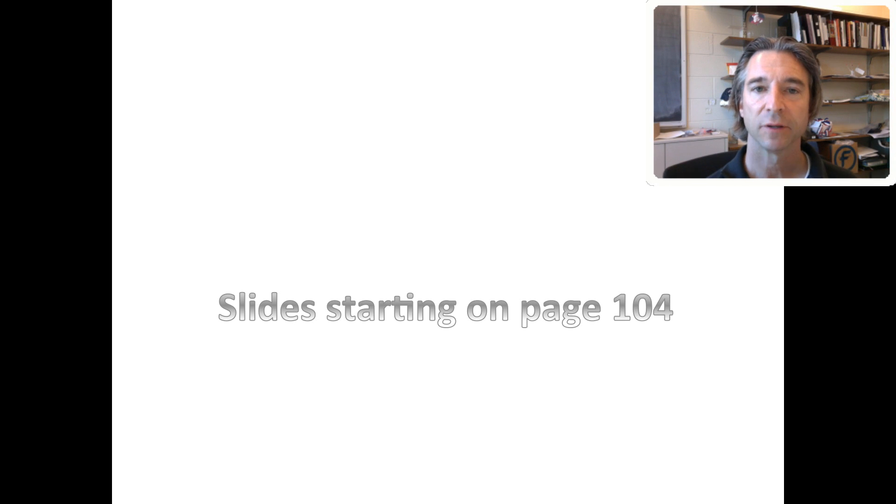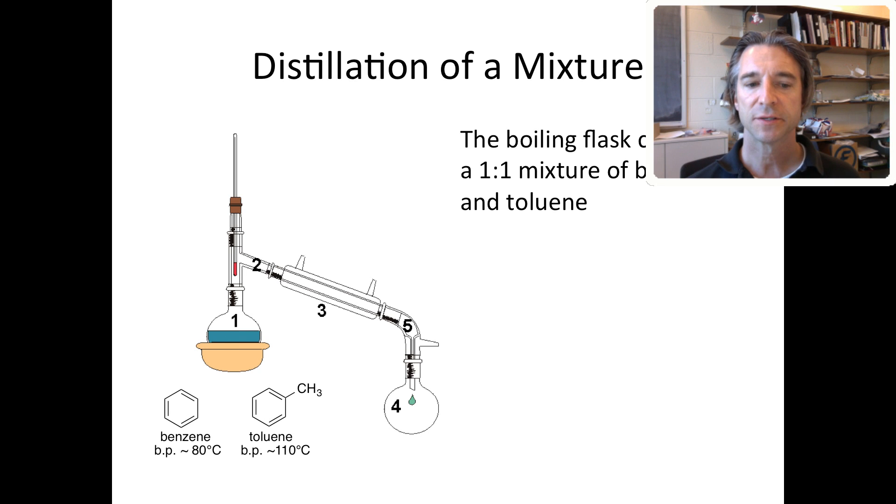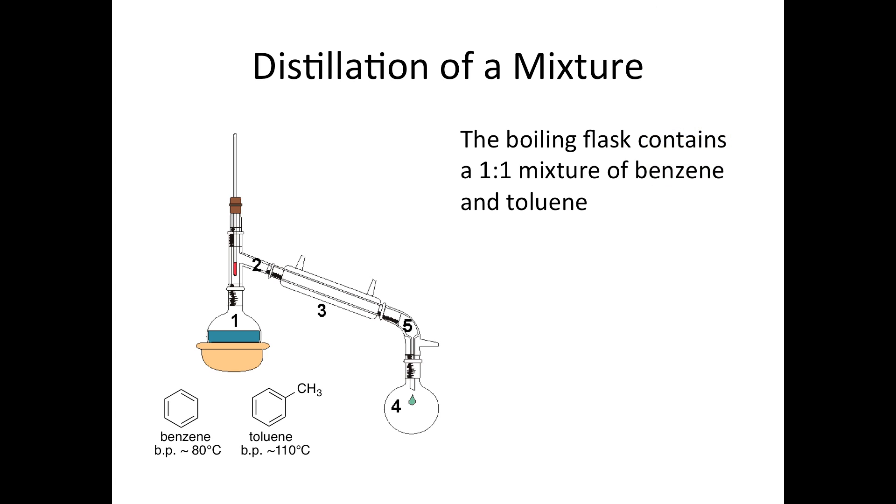Beginning with the slides on page 104, I want to go through an example of a distillation in which the separation of cyclohexane and toluene is accomplished by distillation. Here's the apparatus, there are the chemicals. Benzene is the low boiling component, and toluene is the high boiling component. The flask has a one-to-one mixture of benzene and toluene. What I would like to be able to know is to predict what the boiling point of this mixture is, and also what's going to distill from this one-to-one mixture.